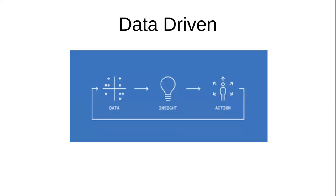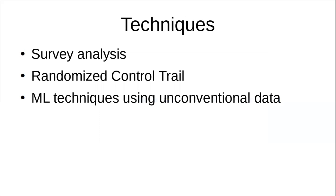Research is now much more data-driven. Before, 30 to 40 years back, research in development used to be more opinion-oriented — people would simply make opinions and write them up as research. Now it's data-driven because it's become somewhat easier to collect data, analyzing data is easier due to advanced tools and techniques, and most importantly, technology now allows us to collect unconventional data that wouldn't have been accessible a few decades ago.